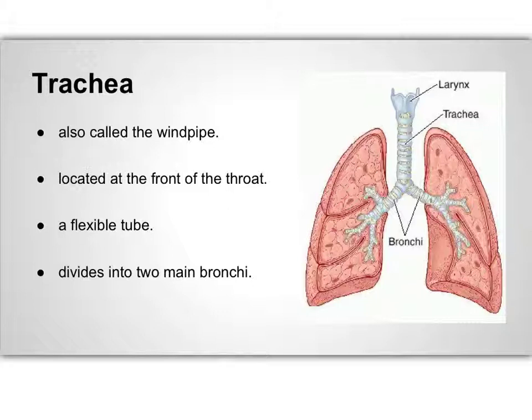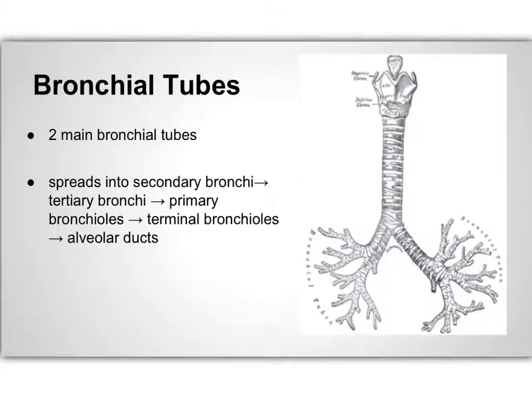At the end of the trachea, it divides into two main bronchi. We have two primary bronchial tubes in our lungs. The right primary bronchial tube separates into three secondary bronchial tubes, and the left primary bronchial tube separates into two secondary bronchial tubes. The secondary bronchial tubes divide further into tertiary bronchial tubes, which then divide into terminal bronchial tubes. Finally, the terminal bronchial tubes divide into 2 to 11 alveolar ducts.